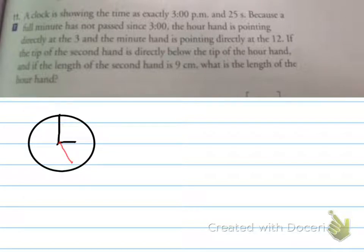A clock is showing the time is exactly 3 p.m. and 25 seconds. Because a full minute has not passed since 3 o'clock, the hour hand is pointed directly at the 3 and the minute hand is pointing directly at the 12. If the tip of the second hand is directly below the tip of the hour hand, and if the length of the second hand is 9 centimeters, what is the length of the hour hand? So that's what we need to find out. Well, what we do here is we can draw triangles.